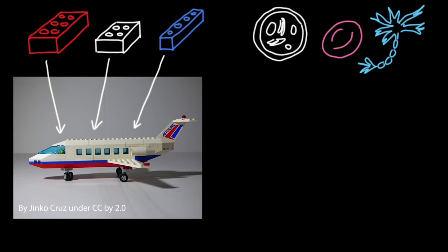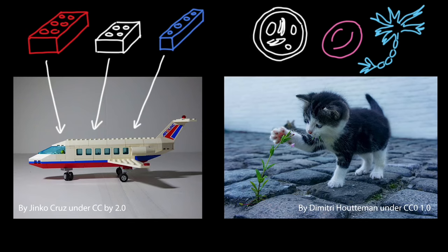Similarly, cells with different structures and functions come together to make something larger, an organism like this adorable kitten right here.